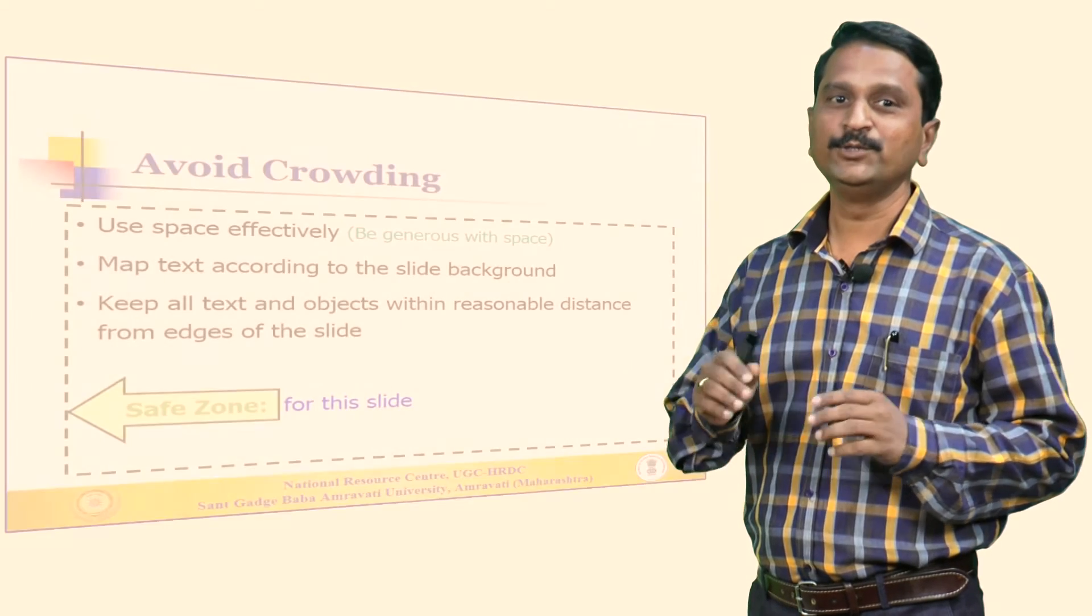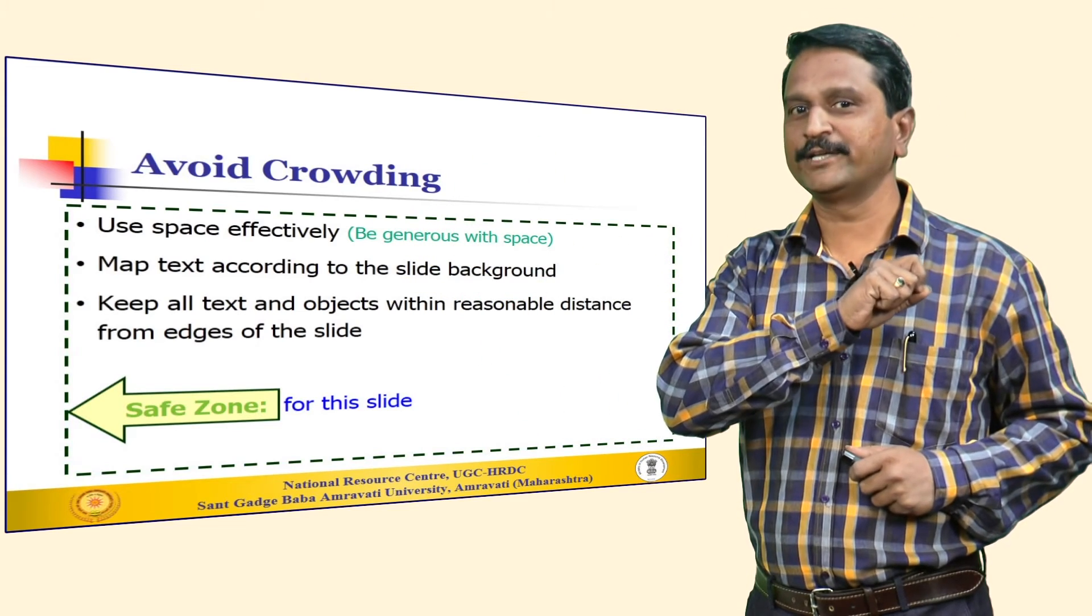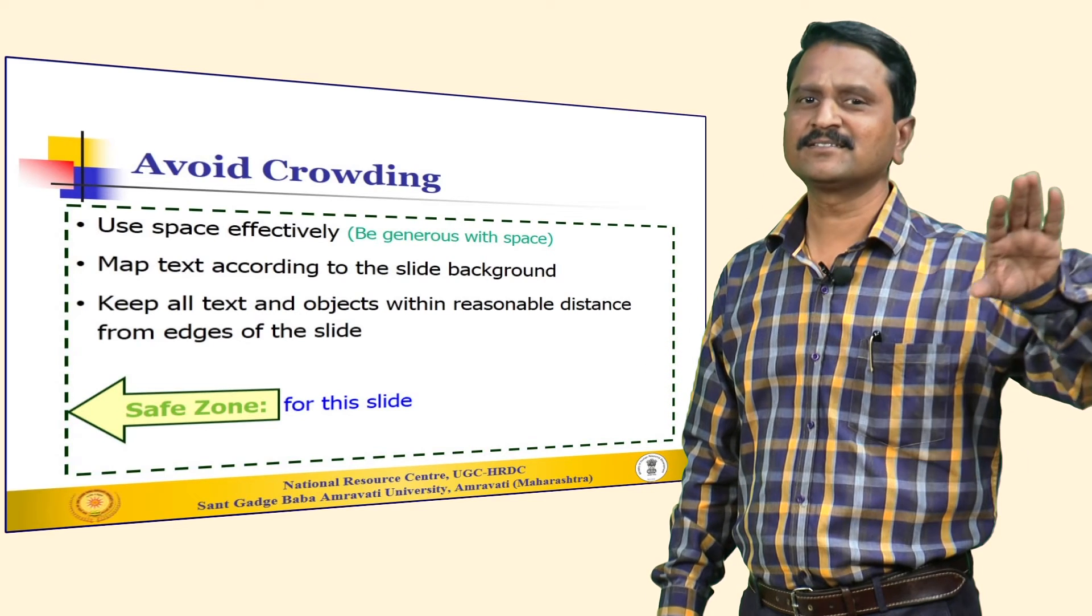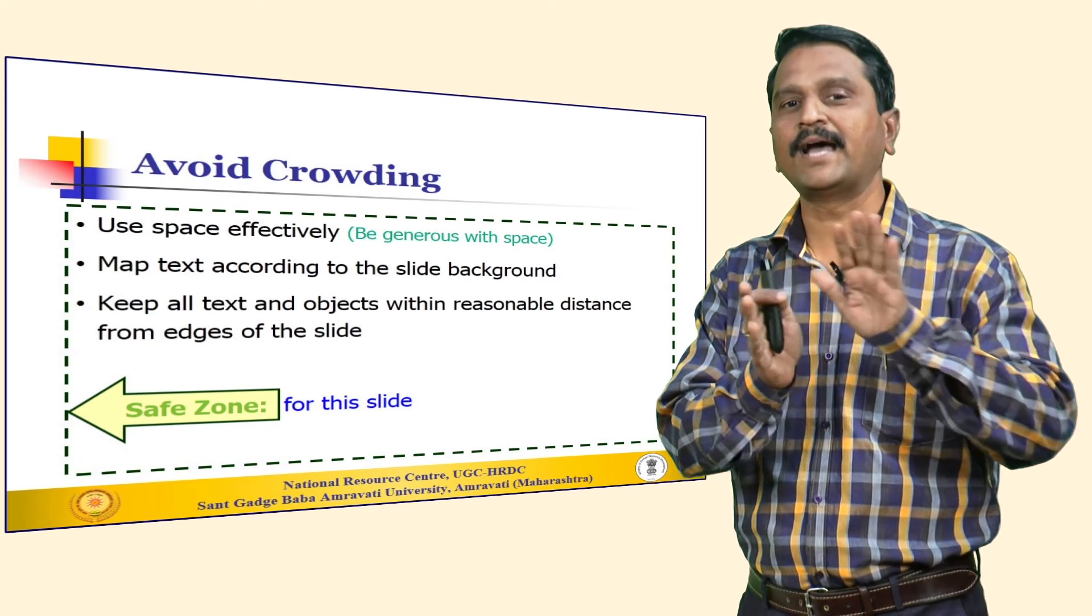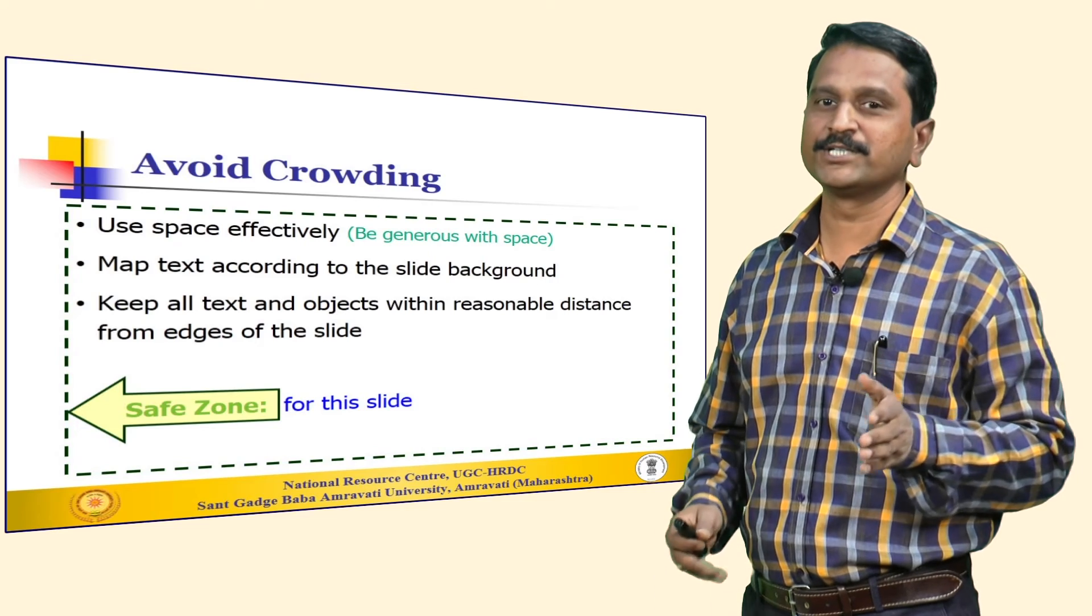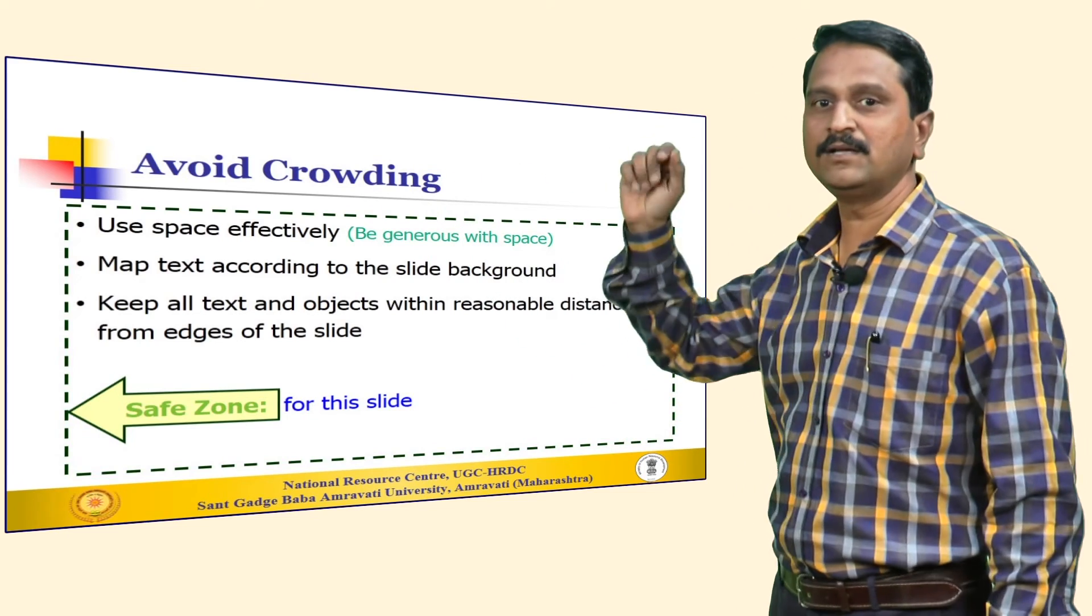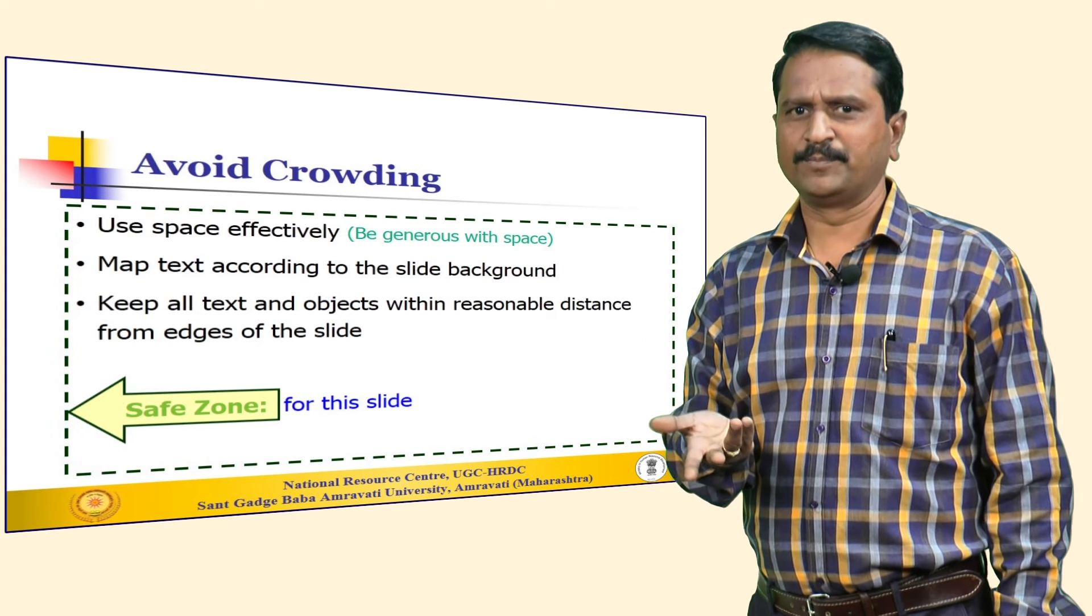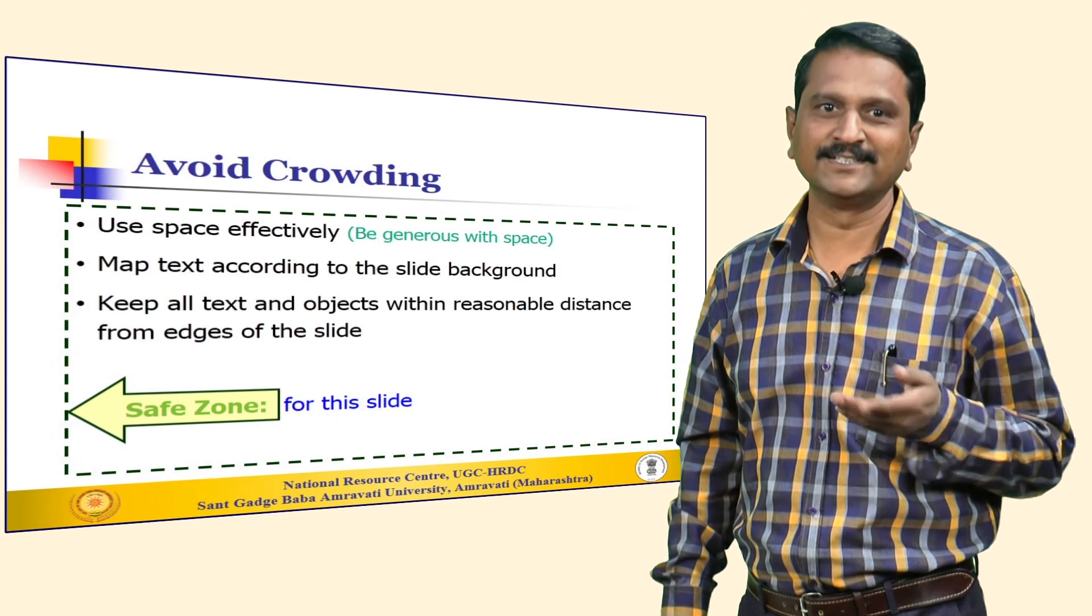Next thing to remember is avoid crowding on the slide. Lots of images and text on a single slide creates a cluttered look. Use the space effectively. Be generous to leave enough space to be free on the slide. Map the text according to the slide background. Wherever there are some graphics or some dark points on the slide, either these points should be left alone or appropriate color of the font should be chosen. It is observed that sometimes the projection of the projector and the screen is not aligned properly. Some portion of your slide is displayed outside of the screen or rather it is not displayed properly. We keep giving excuses that if it was properly aligned you would have been able to view it nicely.